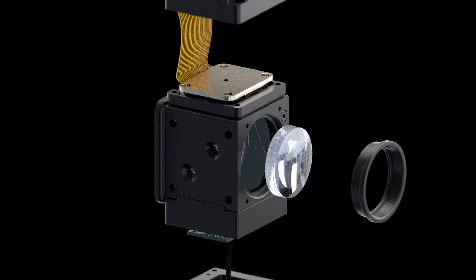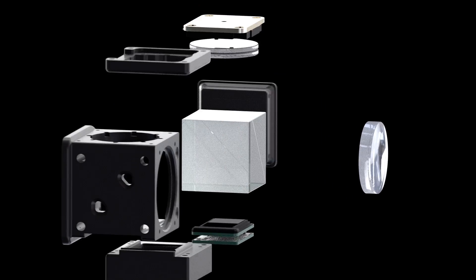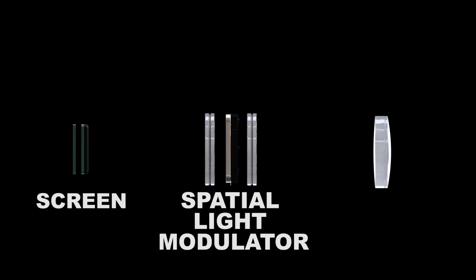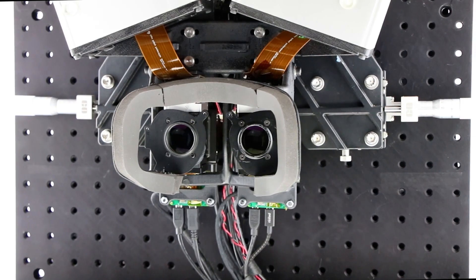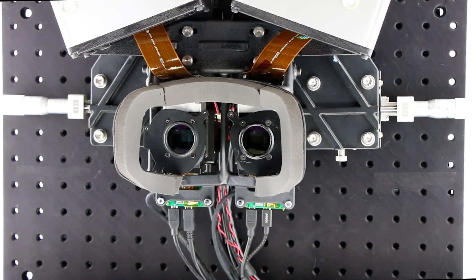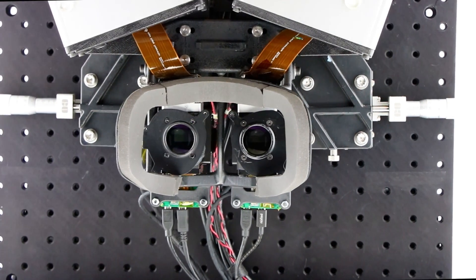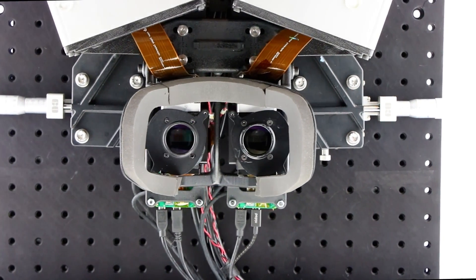Our hardware produces focal surfaces with a controllable optical element called a spatial light modulator, inserted between the headset screen and the eyepiece to bend light rays in different parts of the scene. Using off-the-shelf optical components and a few 3D printed parts, we assembled a prototype for testing.